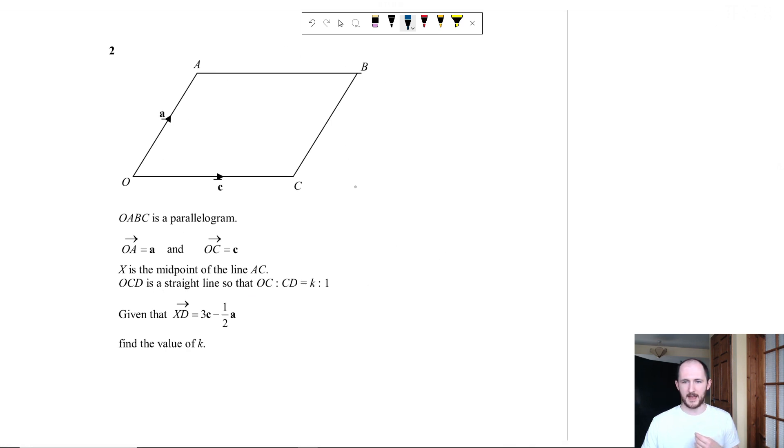So I thought it might be kind of a good thing just to go through it. So we have a parallelogram here, which basically means that this side is also A and this side is also C. Not too relevant at the moment. And it says X is the midpoint of line AC, so I'm going to label that right now. I'm going to draw a line from A to C. And I'm going to put X roughly in the middle. And it says OCD is a straight line, so we know there's like an extension over here where this point over here would be D. And it says that OCD is K to 1. And it says given that XD is equal to 3C minus a half A, find the value of K.